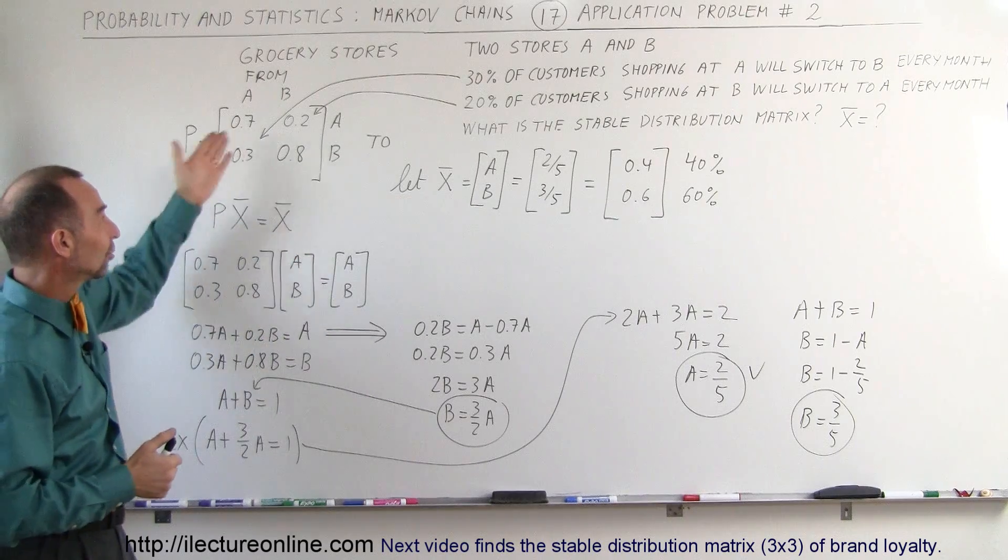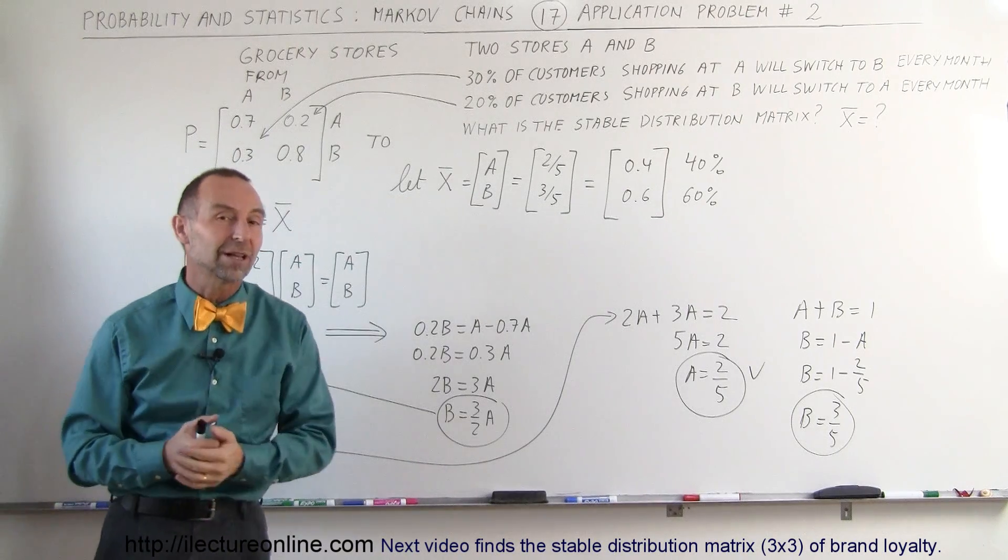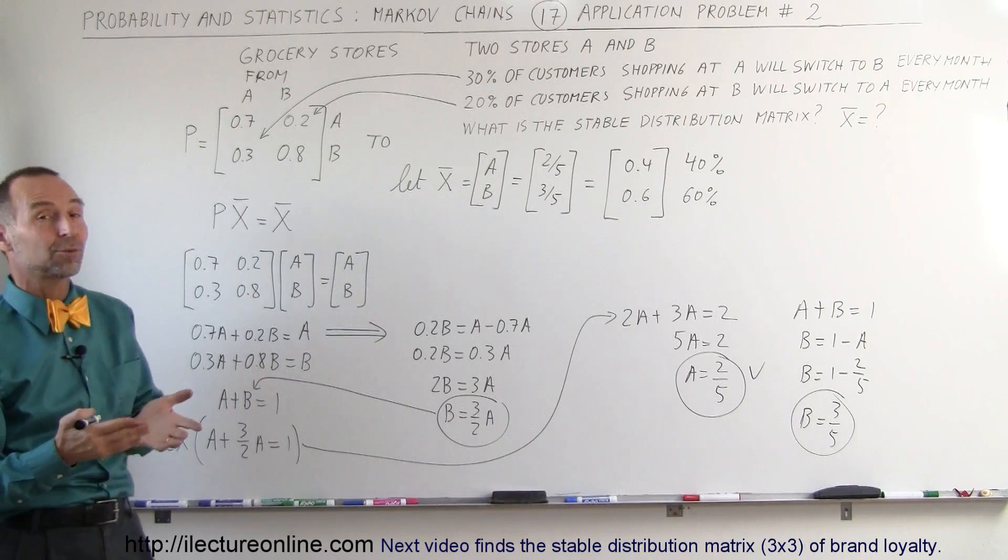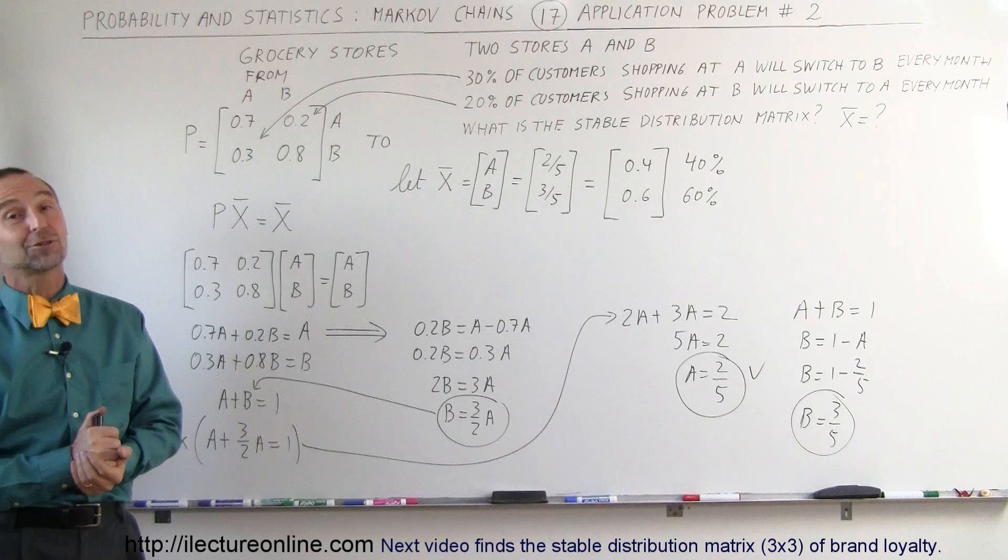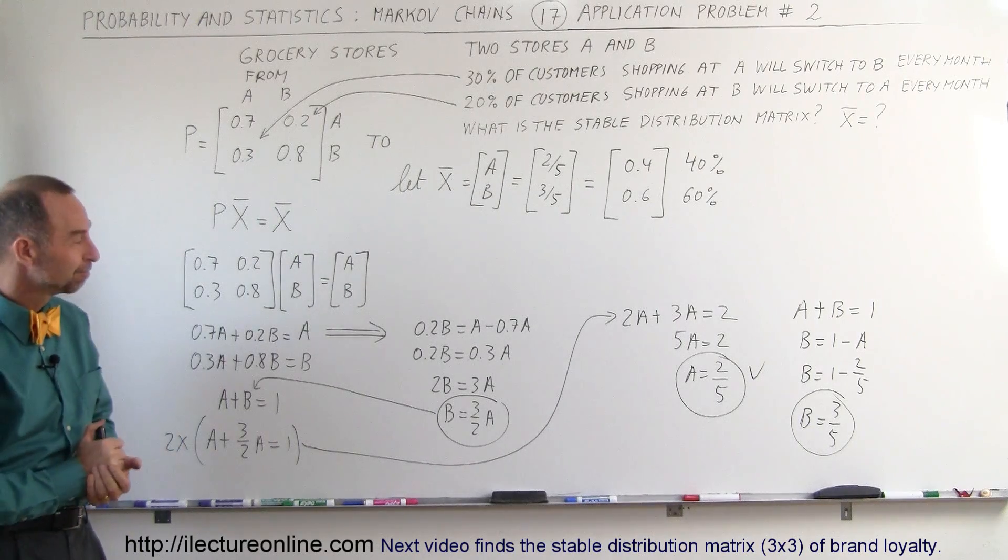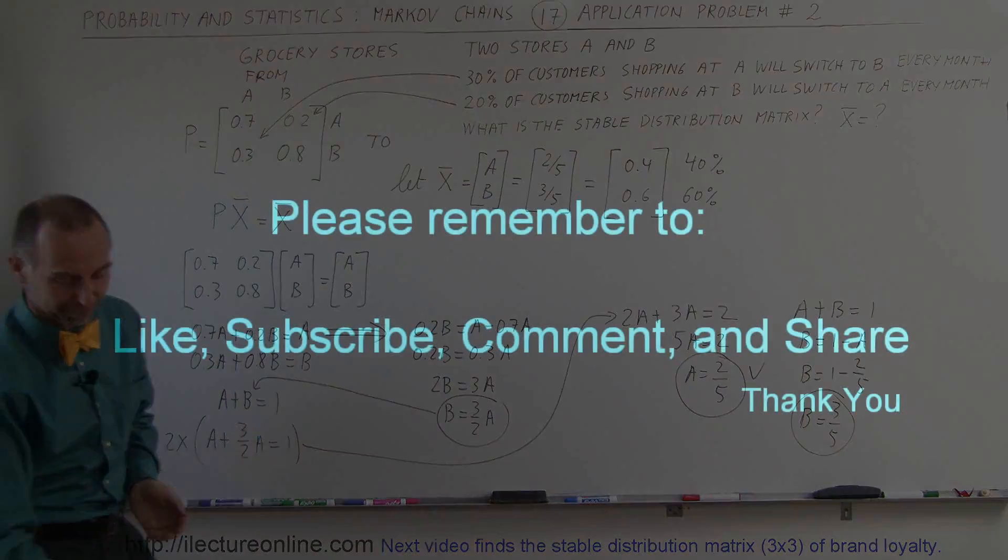And so in this case, if this is what's going on, that will be the eventuality that 60% of all shoppers will go to B and only 40% of the shoppers will go to A. This is how we use Markov chains to figure that out. Thank you.